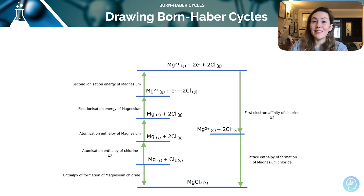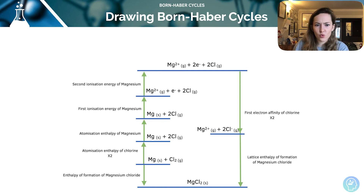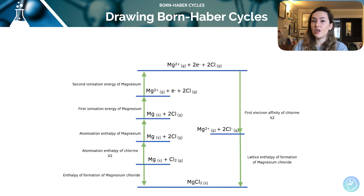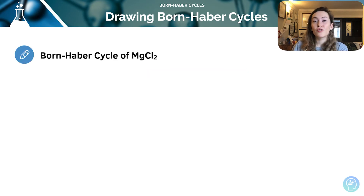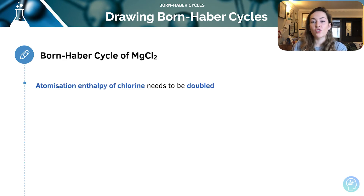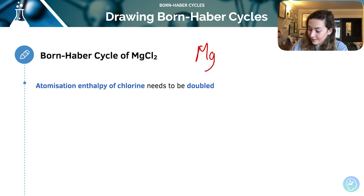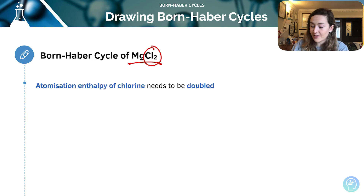Here is an example of a Born-Haber Cycle with magnesium chloride. It's a little bit different because it's MgCl₂, so there are a few extra things to consider. Born-Haber Cycles involving group two elements are slightly different and involve a few more steps, but as long as you've learned your definitions, you'll be fine. The atomisation of chlorine needs to be doubled because it's MgCl₂ — there are two moles of chloride ions in each mole of magnesium chloride.